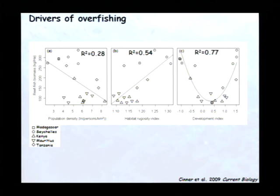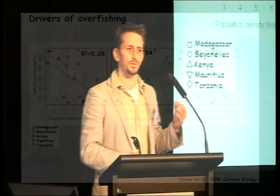We also examined a multivariate index of community-level socioeconomic development, which was based on the presence or absence of 16 community-level infrastructure items — things such as hospitals, schools, roads, and electricity. Interestingly, the strongest relationship we found with reef fish biomass was the quadratic function of the socioeconomic development index. Thus, where development was very low or very high, fish biomass was high, but biomass was low where development was intermediate. Fish biomass at the bottom of this curve was about one-quarter of that of the biomass at the high and low development sites.